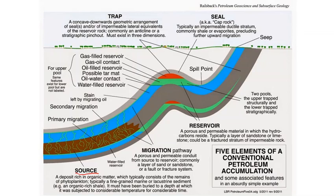We will discuss the details of source rock in the coming slides. After the source rock generates the hydrocarbon, migration occurs. Migration is of two types: primary and secondary. In primary migration, the petroleum moves from the source rock to the reservoir rock. Never get confused: if the oil is moving within the reservoir rock, it is secondary migration; if it is moving from source rock to reservoir rock, it is primary migration.